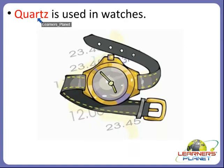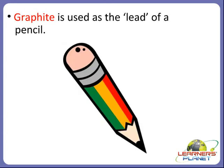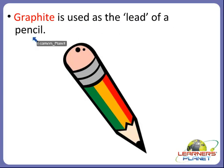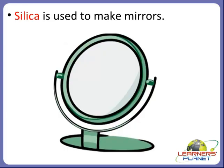Quartz is also another type of mineral which is used in watches. Always remember that the pencil you use — the lead of the pencil is made up of graphite.